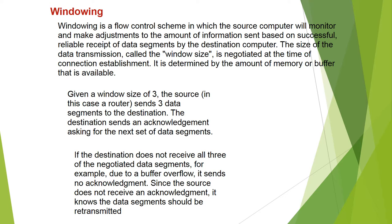Given a window size of 3, the source — in this case a router — sends 3 data segments to the destination. The destination sends an acknowledgement asking for the next set of data segments. If the destination does not receive all 3 negotiated data segments, for example due to a buffer overflow, it sends an acknowledgement. Since the source does not receive a positive acknowledgement, it knows the data segments should be retransmitted.